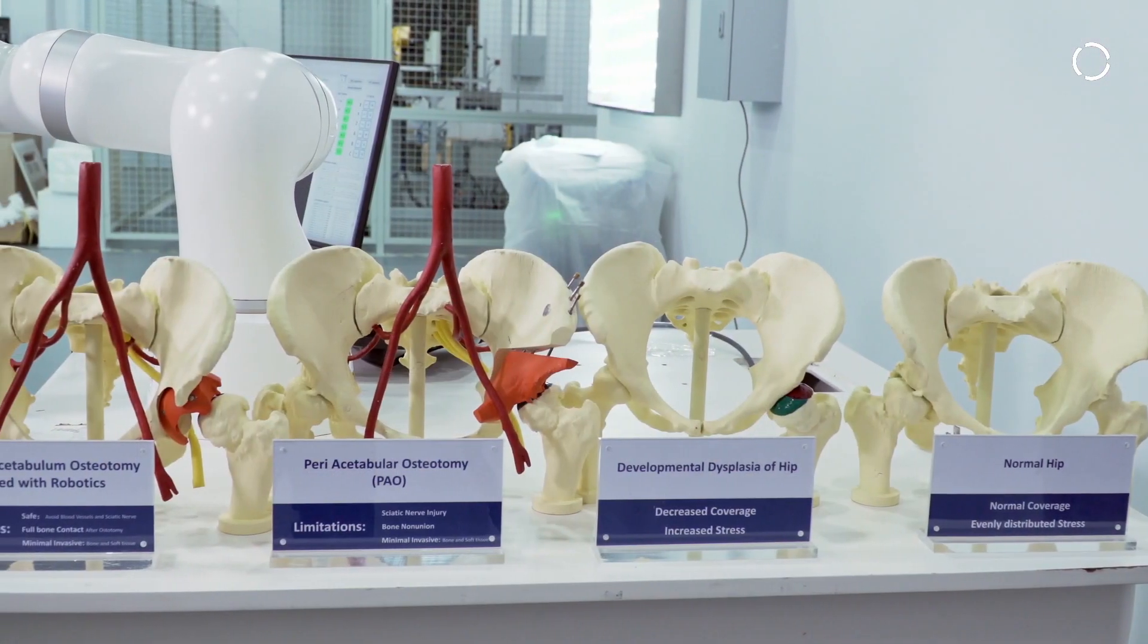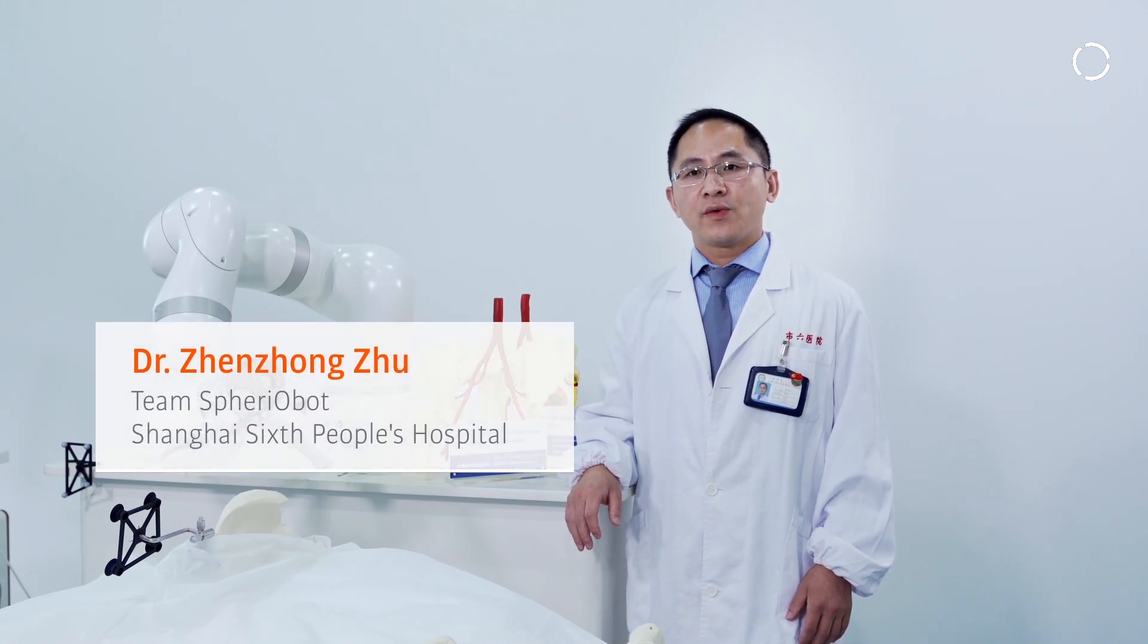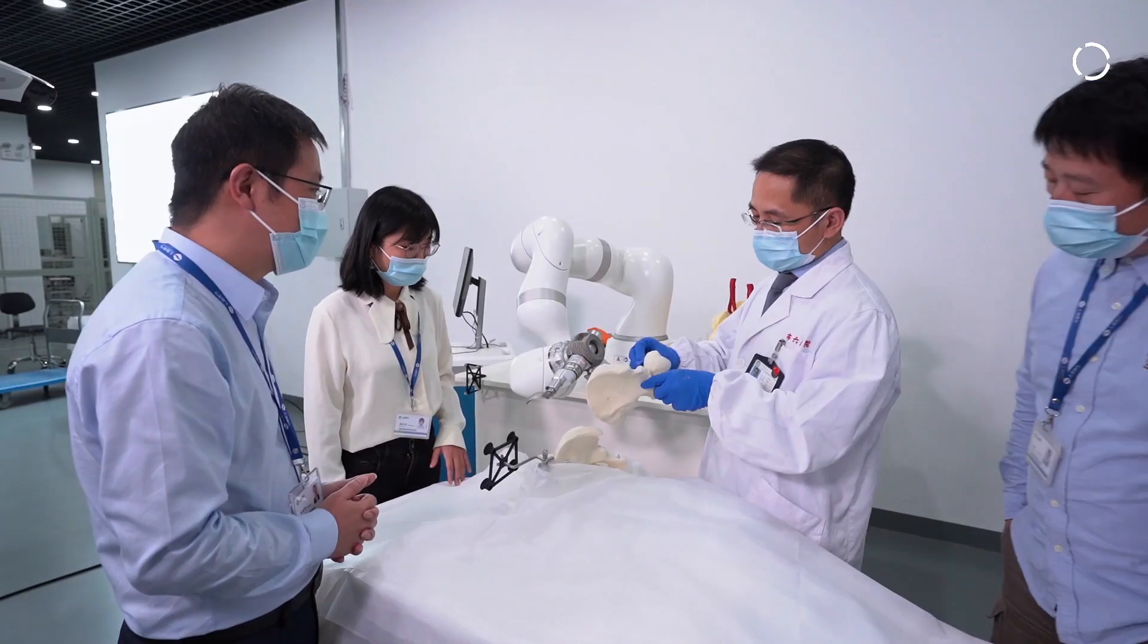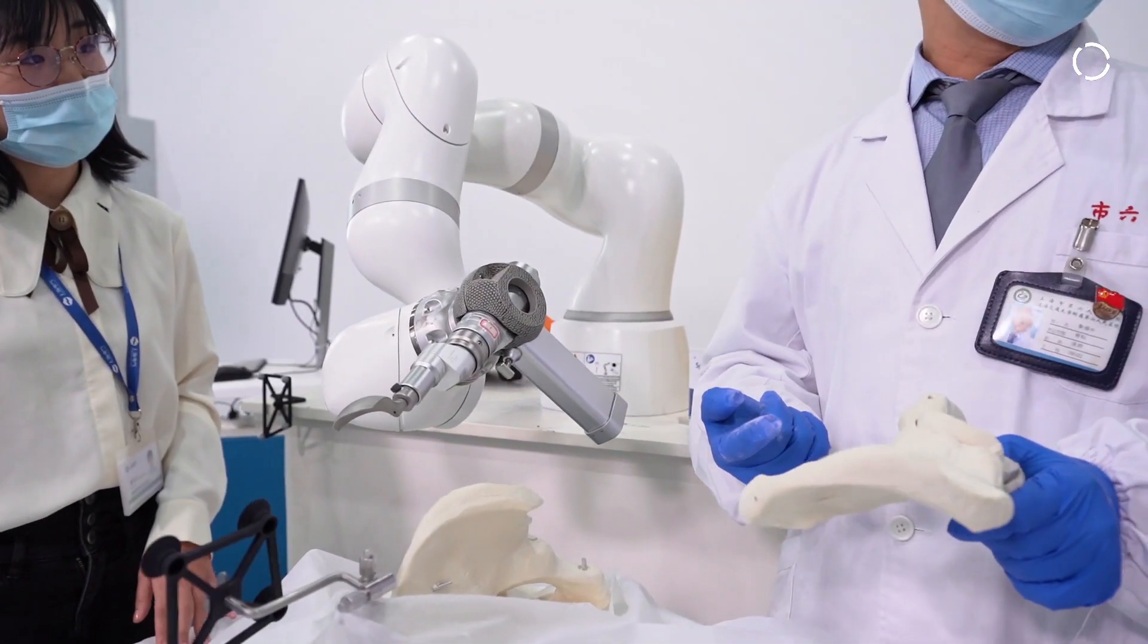The basic idea of treating hip dysplasia is to reposition the socket. Now we need to cut off all of these bony structures around the acetabulum, which is very deep and also very invasive.